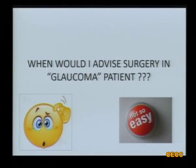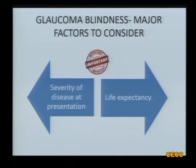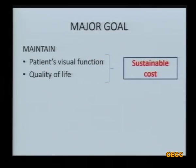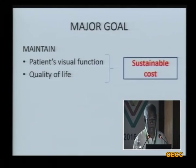It's a very important question: when would I advise surgery in a glaucoma patient? And of course it's not so easy. The major factor to consider is the severity on one side and the life expectancy on the other side. The major goal of surgery is mainly to maintain the patient's usual function and the quality of life with a sustainable cost.